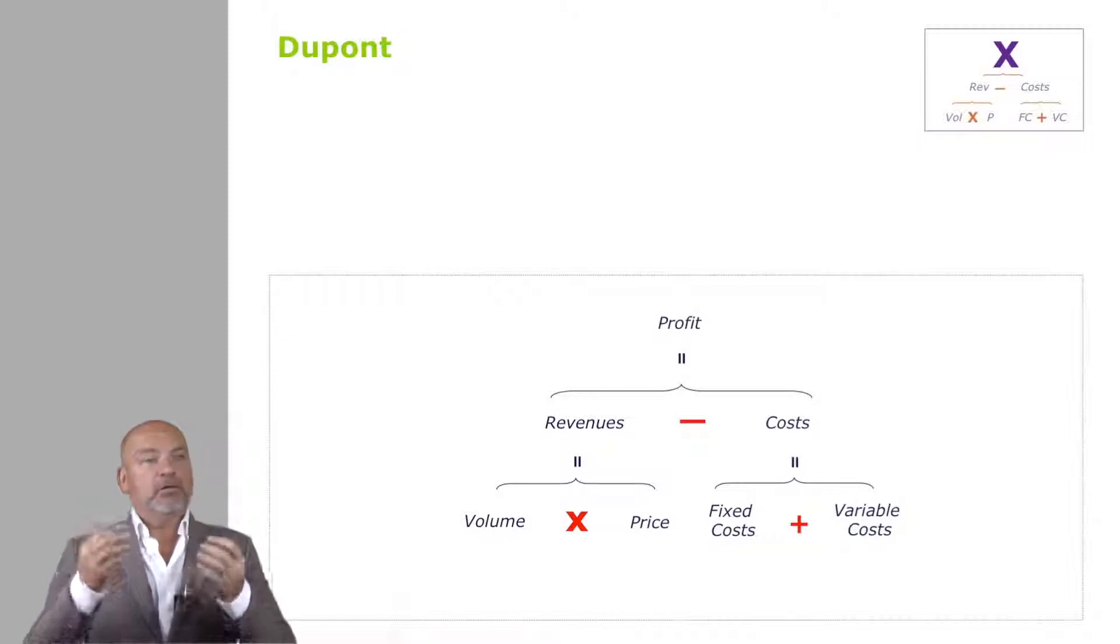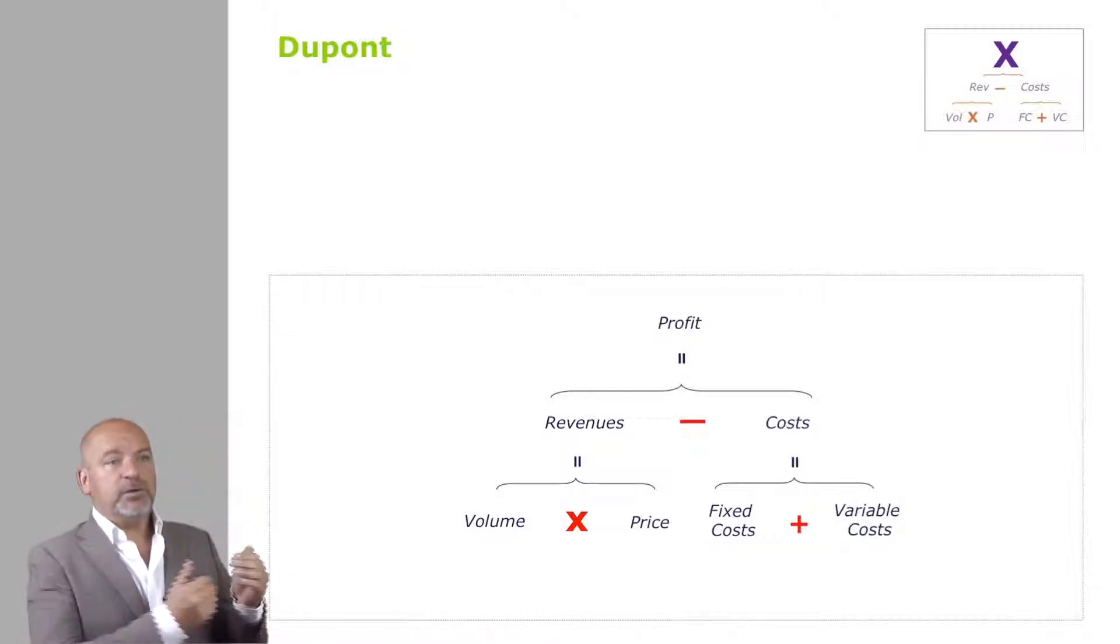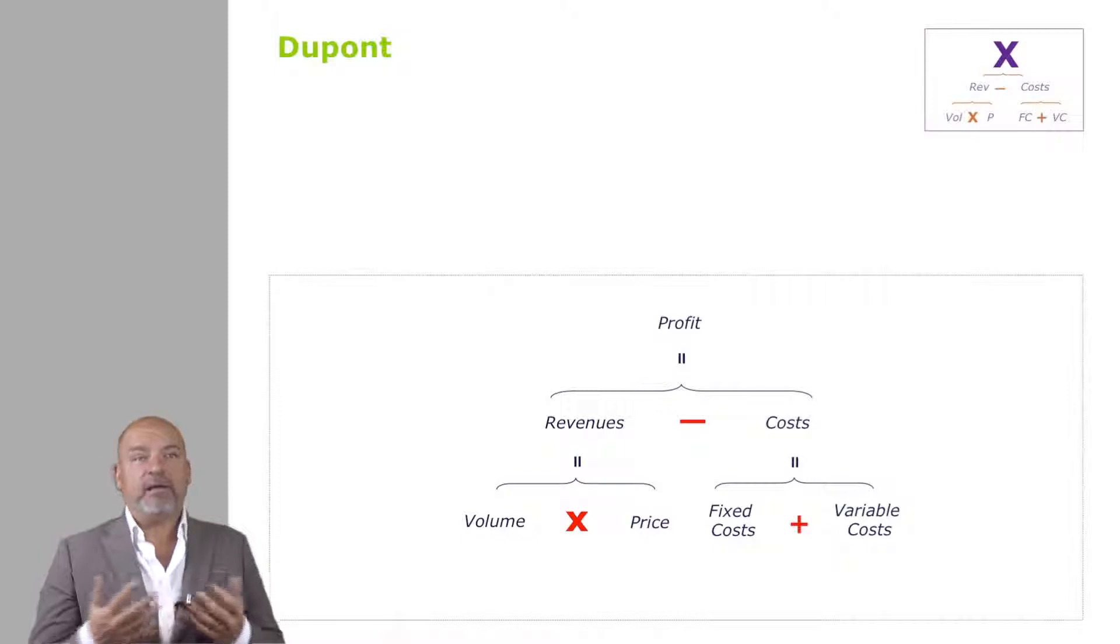So, for example, let's have a look here at a very classic one: profit. Profit equals revenue minus costs, revenues are volume times price, and costs are fixed costs plus variable costs. Very simple, all of you are really familiar with that.